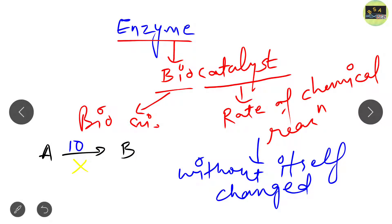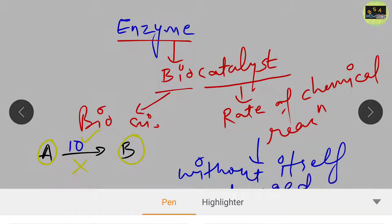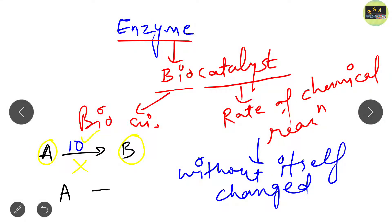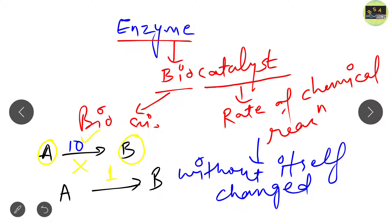When a substrate A is converted into product B without enzyme, the time taken is about 10 minutes. Similarly, if the same reaction — A converted into B — takes place in the presence of enzyme, it may take only one minute. This means the rate of reaction increased: it earlier took 10 minutes but now takes only one minute when enzyme is present. So enzyme increases the rate of reaction without itself being changed.